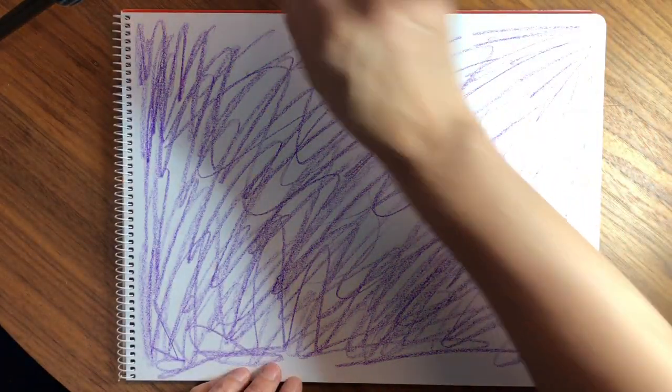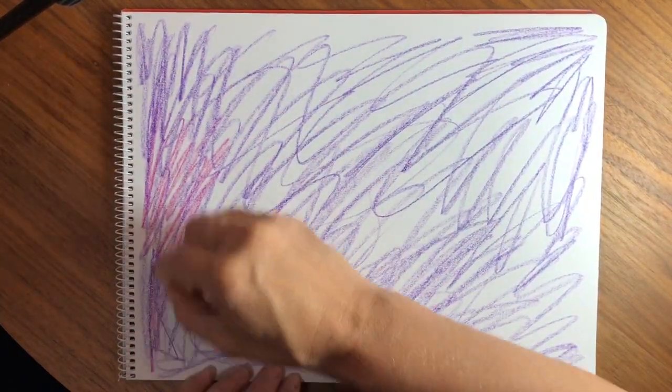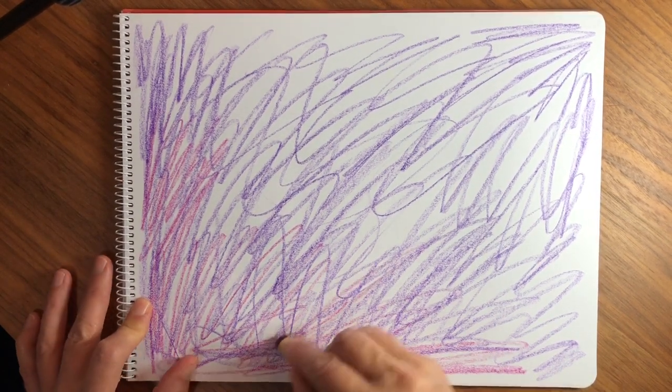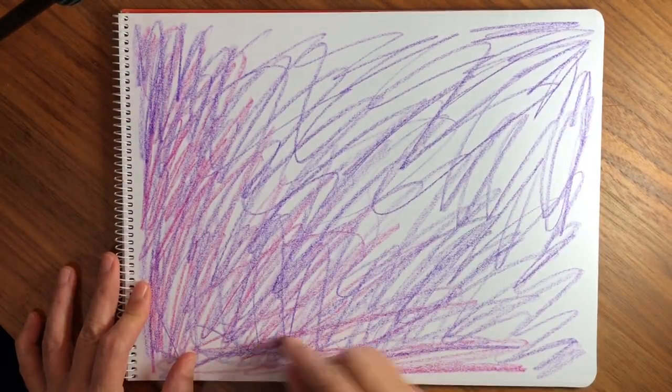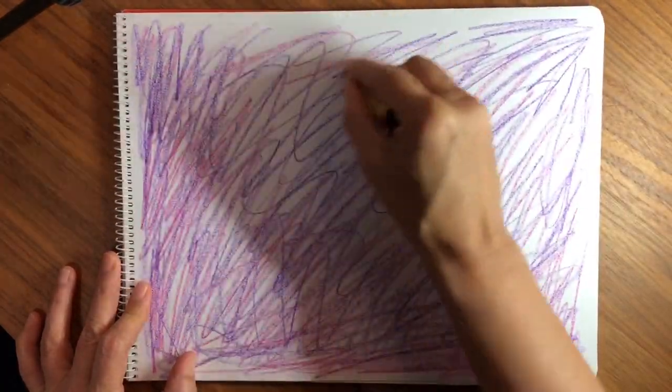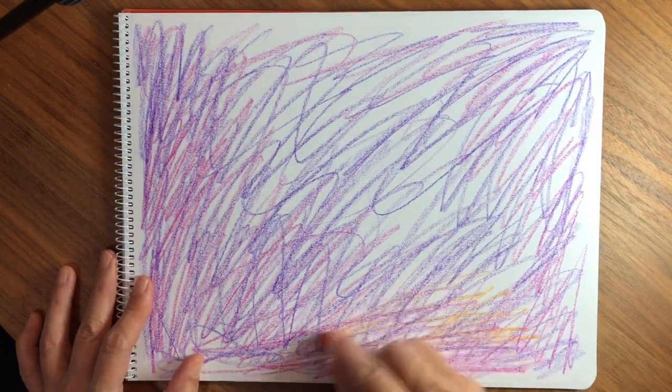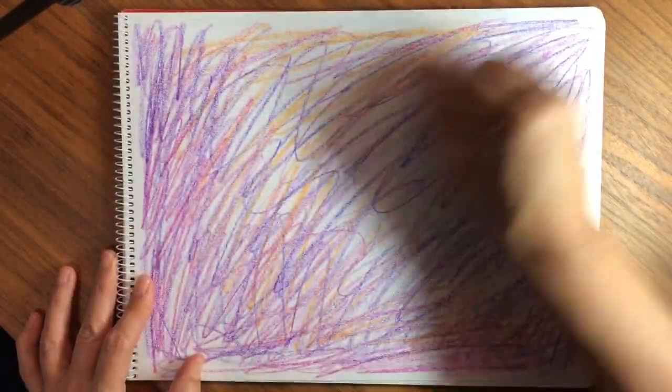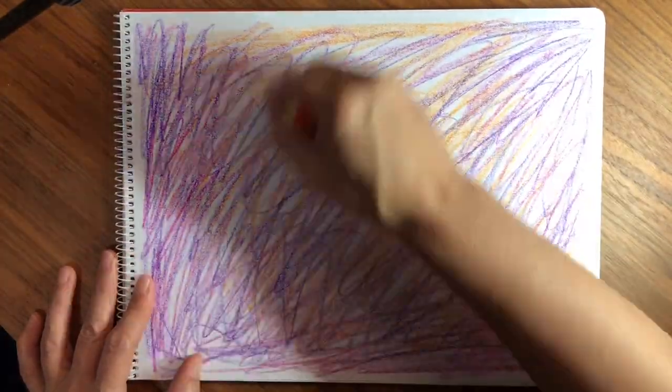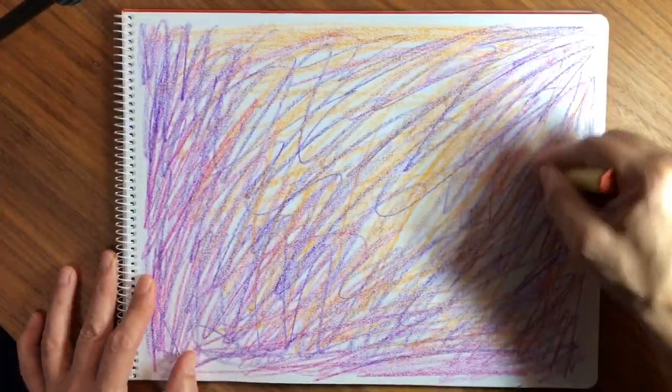Once you have one color down, you're going to take another color and make a whole section of that color. This is very hard to do - many people have a very hard time scribbling. Now I'm going to take some orange. Okay, and there I have my scribble drawing.